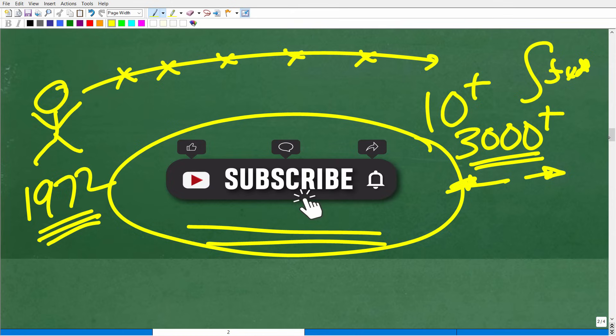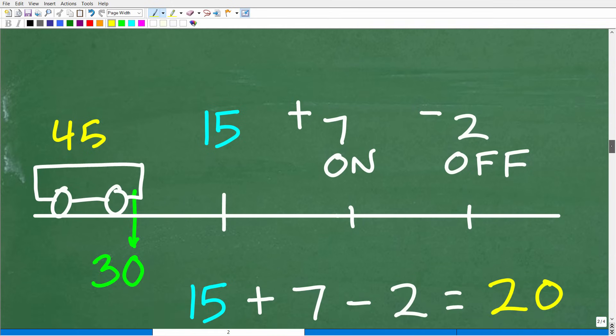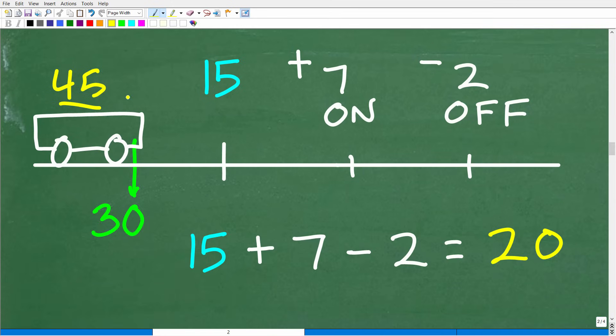All right. So let's go ahead and finish up this problem now. So here is our bus. Two-thirds of the 45 people departed. We figured out that was 30. That leaves us with 15 people on the bus.